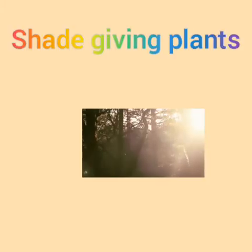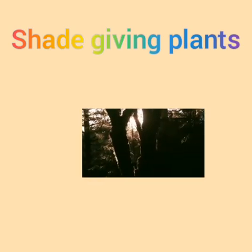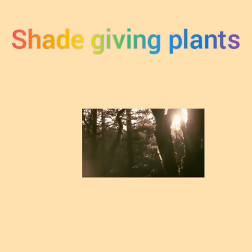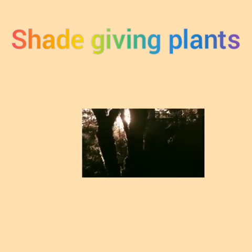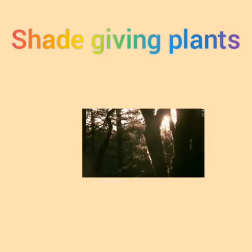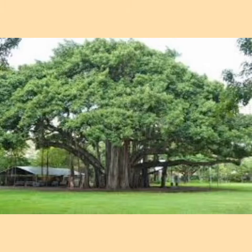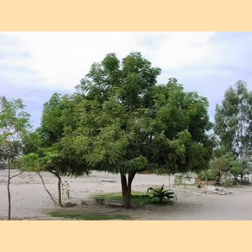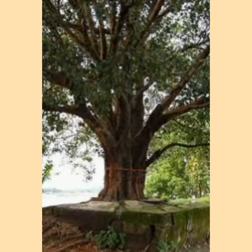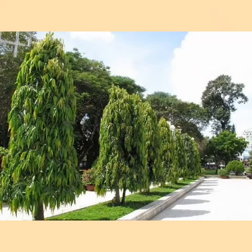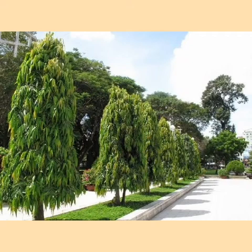Plants give us shade also. In summer season when we go on a long journey we sit under the shade of the plants. Some examples for shade giving plants are banyan tree, neem tree, peepal tree, and Ashoka tree. These trees were planted by King Ashoka on both sides of the road.